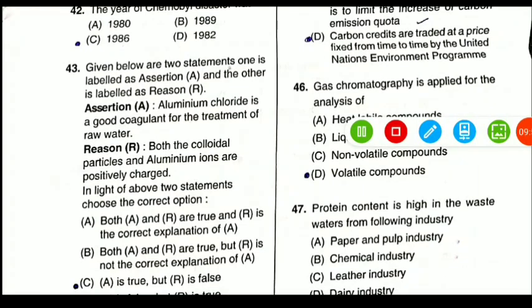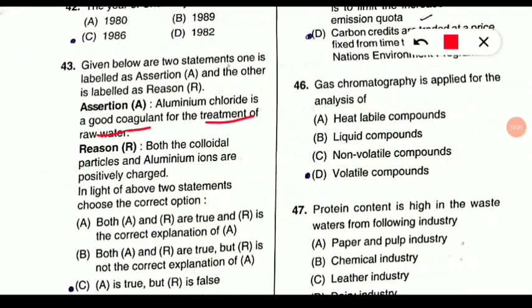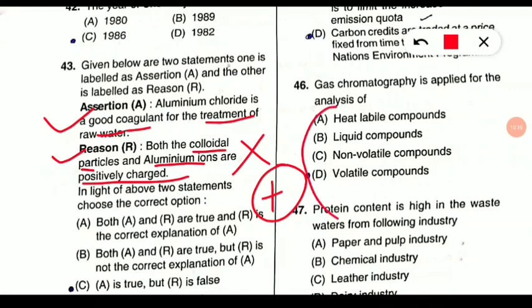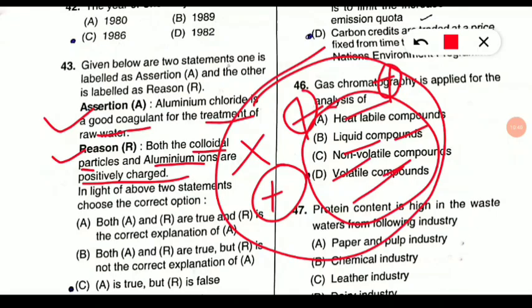Question 43 is another assertion-reasoning question. Assertion: aluminum chloride is a good coagulant for the treatment of raw water — correct. Reason: both the colloidal particles and the aluminum ions are positively charged — this is incorrect. Aluminum ions carry a positive charge, while colloids carry a negative charge. Because of this opposite charge attraction, aluminum surrounds the colloids, forming a mass that is removed, thereby treating the water.